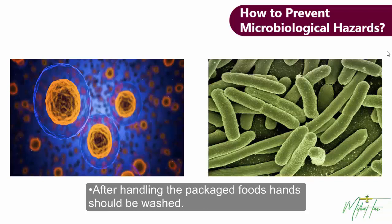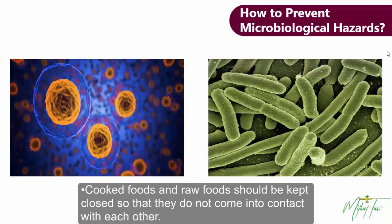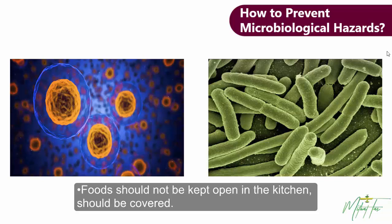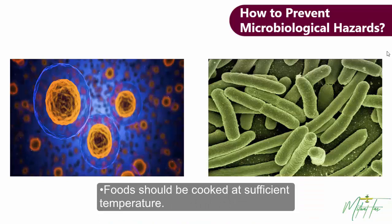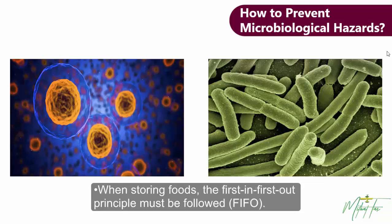After handling packaged foods, hands should be washed. Cooked foods and raw foods should be kept separate so that they don't come into contact with each other. Foods should not be kept open in the kitchen — they should be covered. Trash cans should be pedal-operated if possible, and hands should be washed after handling the trash can. Foods should be cooked at sufficient temperature. When storing foods, the first-in-first-out principle must be followed.